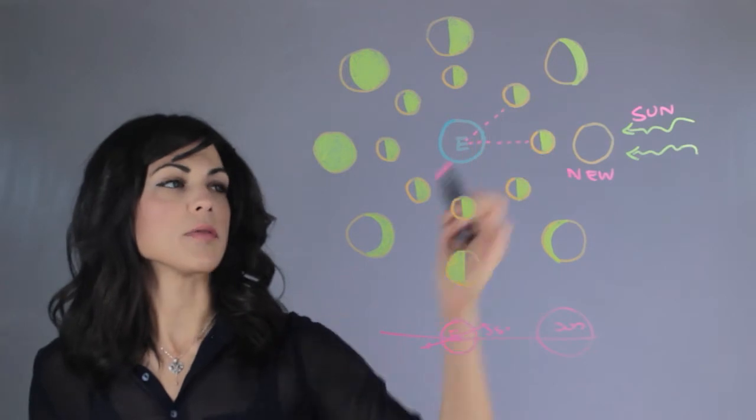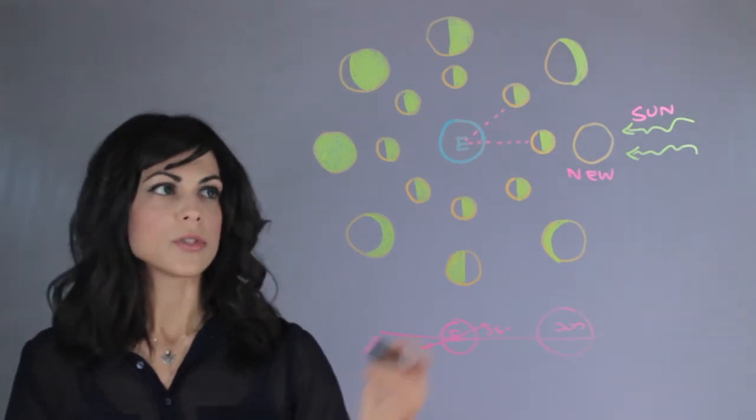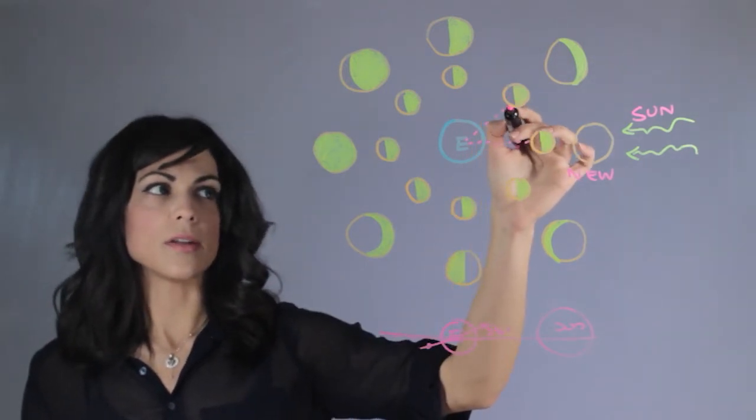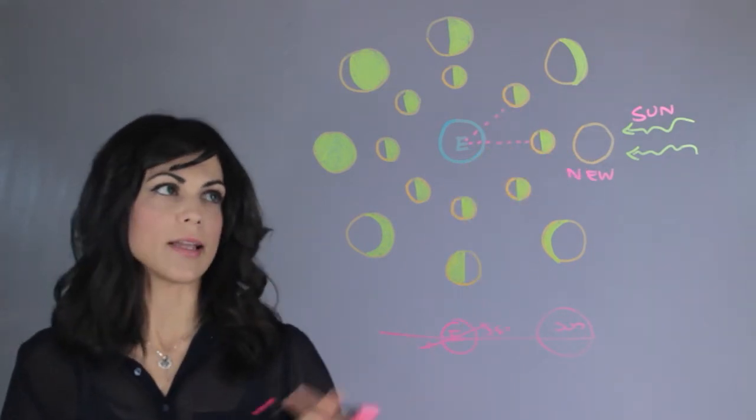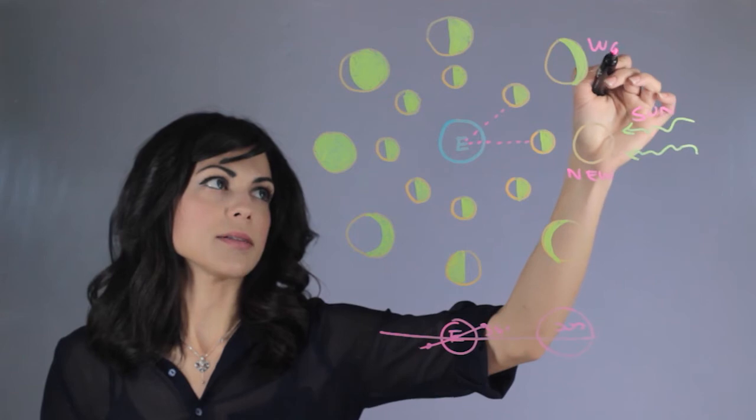Now what happens when we look at it at about 45 degrees. So we now see some of it, most of it dark, with a little edge and this is called the waxing crescent.